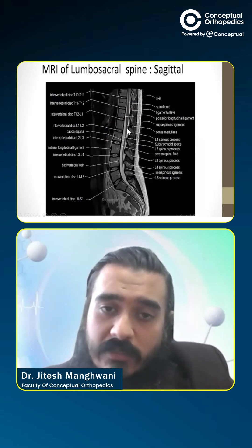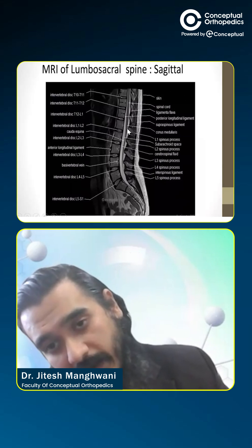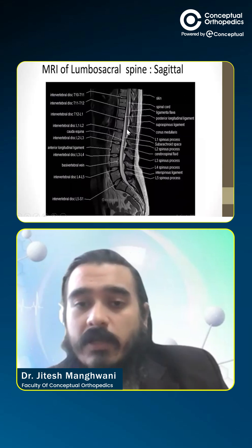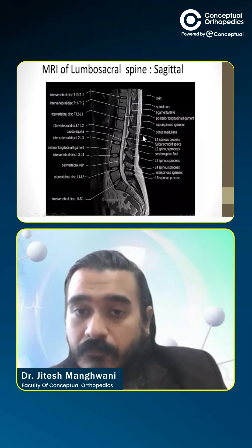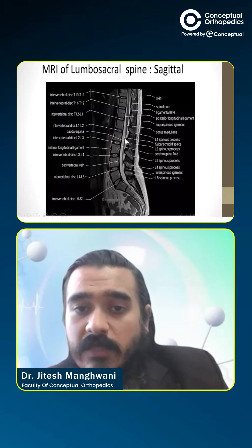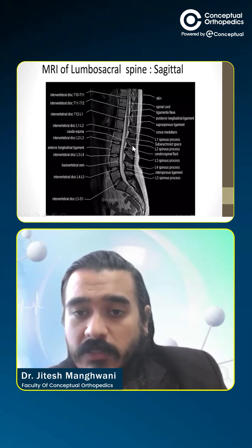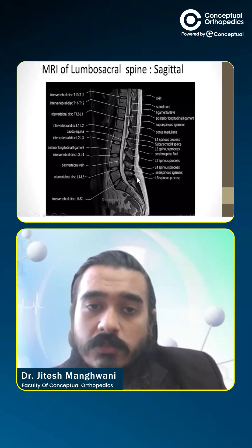Conus medullaris is the area where the spinal cord ends, commonly at T12 or L1. L1 spinous process, subarachnoid space, L2 spinous process, the CSF fluid, L3 spinous process, and so on and so forth.